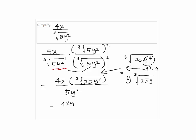So we have 4xy times cube root of 25y over 5y squared. One y can be cancelled, so the answer is 4x times cube root of 25y over 5y.